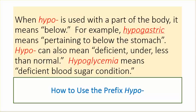How to use the prefix hypo. When hypo is used with a part of the body, it means below. For example, hypogastric means pertaining to below the stomach. Hypo can also mean deficient, under, less, or less than normal. Hypoglycemia means deficient blood sugar condition.